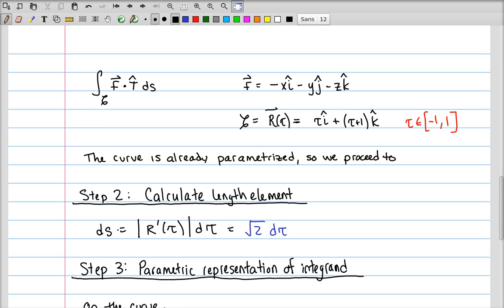The length element is the absolute value of r prime of tau, the magnitude of that vector rather. And so we take the square root of the two derivatives, square root of 1 squared plus 2 squared, and just the square root of 2 d tau.